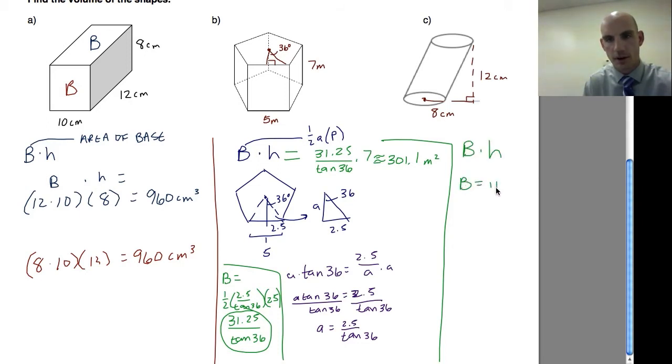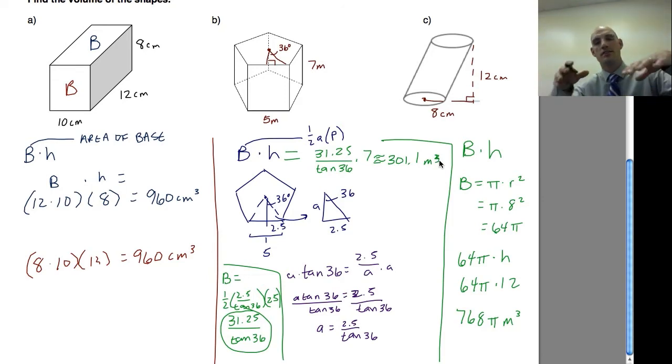Well the base is equal to pi times radius squared, equals pi times 8 squared, 64 pi. And then 64 pi times the height, 64 pi times 12, 64 times 12, 768 pi meters cubed. This one should also be meters cubed and that's all there is to it. Area of the base times the height. That's all there is guys.